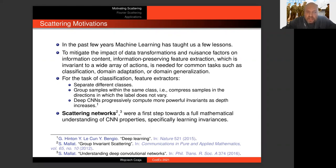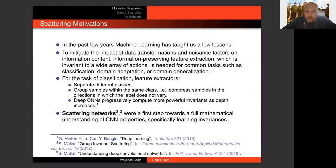Specifically for the task of classification, the feature extractors we would like need to do a number of things. On one hand, they obviously need to be able to separate different classes. But they should also group samples within the same class in an improved way — for example, by compressing samples in directions in which our labels do not vary. This is something that deep convolutional neural networks have been demonstrably very good at in recent years. Trying to understand why that happens and building mathematical foundations for perhaps new, better ways of doing this feature extraction is the idea behind this talk.